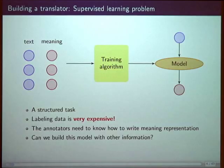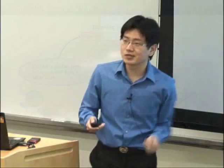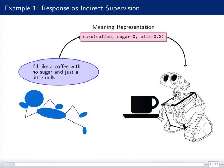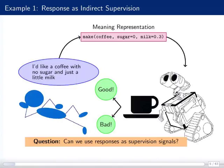What's the problem with this approach? The problem is that labeling the data is very expensive, especially in this case where the annotator needs to know how to translate the human request into some meaning representation, and this is not easy. So the question we are trying to ask is: can we train this model with other types of information? For example, if you drink a cup of coffee and tell Wally whether it's good or bad — this response doesn't tell you the meaning representation directly, but it contains some information about it. Can we use responses as a supervision signal to improve the statistical model?